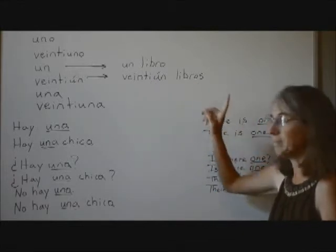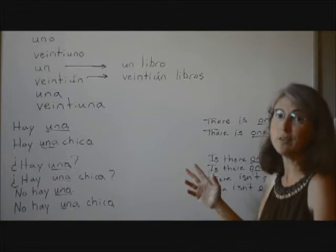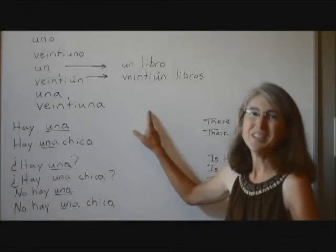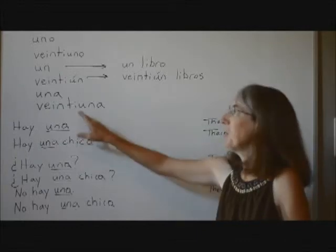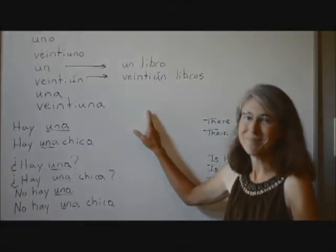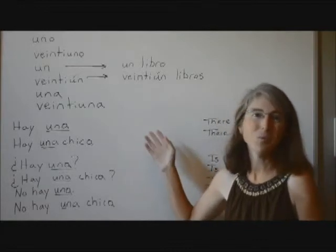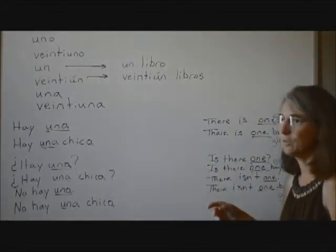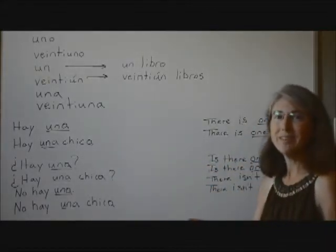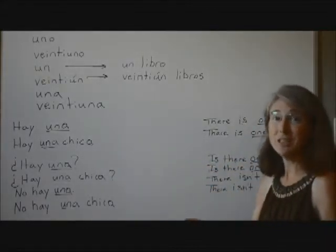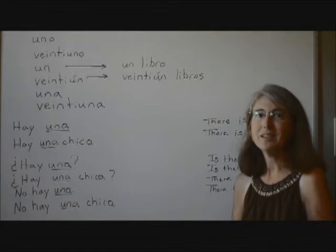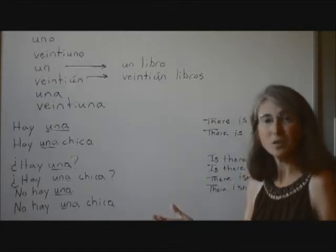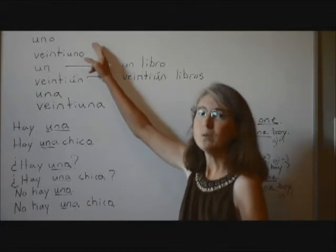So these are examples of how to use the number one. All of the other numbers in Spanish that end in one also follow this same format. So if we have the number 'veintiuno' — 21 — and we're just talking about 21 boys, we would say 'veintiún chicos.' In this example, we're talking about 21 books: veintiún libros. So any time a number ending in one has a masculine noun that comes right after it, we just drop the O. Veintiún libros.